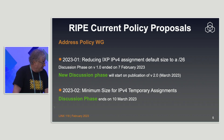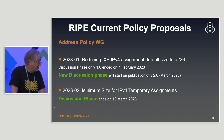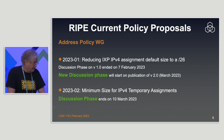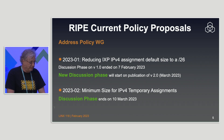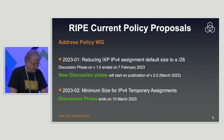IPv4 isn't as plentiful as it used to be. This proposal reduces the default IXP assignment size to a /26, because most IXPs never get big enough to actually use a /24 — in fact about 70% of them will fit into a /26 anyway. So it makes sense to reduce the default assignment size to a /26. Discussion is ongoing.